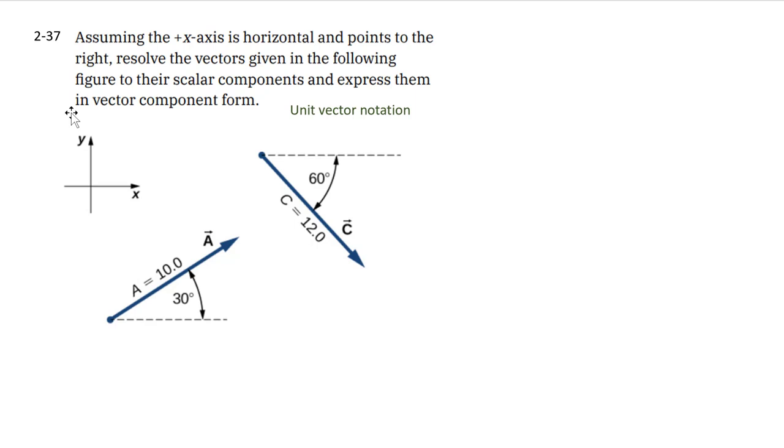And the unit vector notation involves these funny looking things, i-hat, j-hat, k-hat. Instead of a regular vector where we have an arrow on top, we have these funny hat things. And that denotes that they're what we call unit vectors.